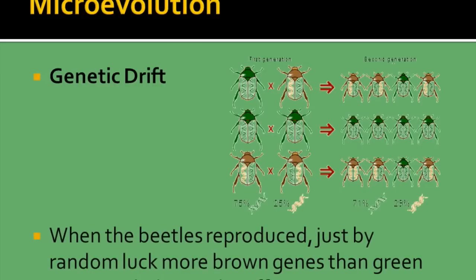With genetic drift, using the example of the beetles: if we have a first generation of beetles breeding to create a second generation — with one green breeding with a brown, or two greens, or two browns — it's just going to be random luck as to what trait the offspring will end up with. Are they going to be green or are they going to be brown?